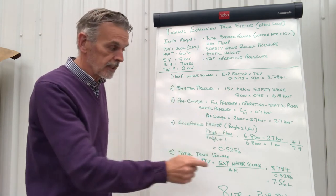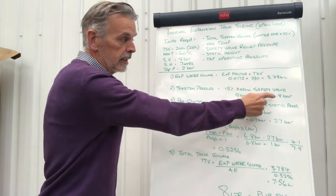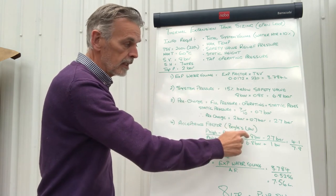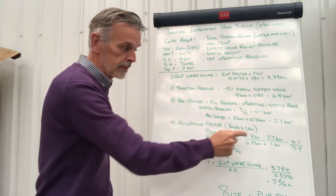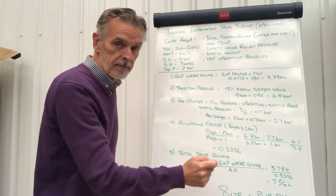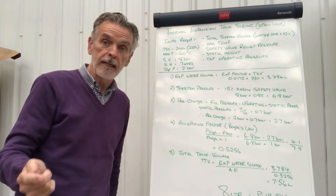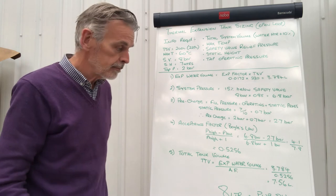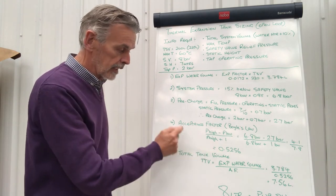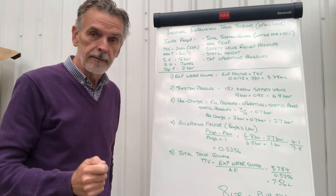Now Boyle's law states: high pressure P high minus P low divided by P high plus 1. So in this calculation again, we have a high pressure of 6.8 bar, which is here, the system pressure. We have a low pressure of 2.7 bar, which is the pre-charge. So 6.8 minus 2.7 bar divided by 6.8 bar plus 1 bar, 1 bar being atmosphere. That comes to 4.1 divided by 7.8 bar. That gives you an acceptance factor of 0.5256.